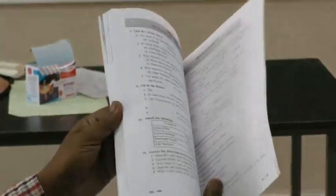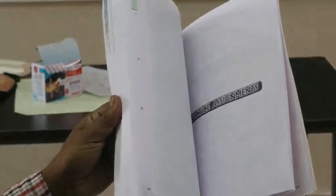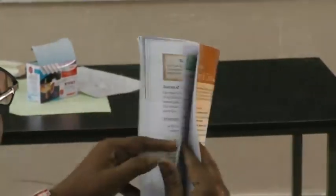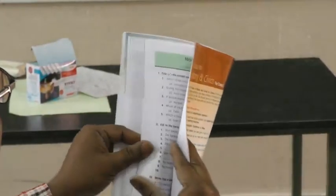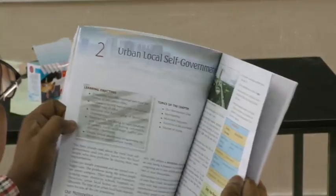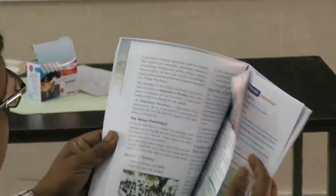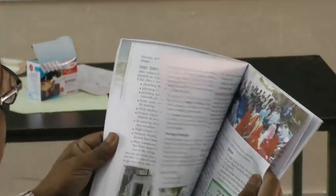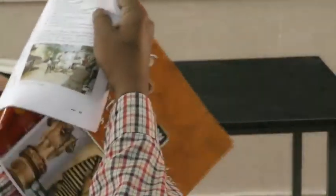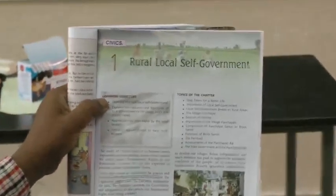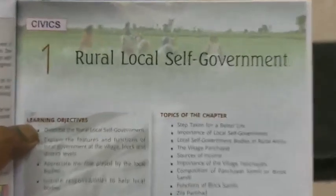I will also be showing you the first page of the third chapter which you have to study — that is Rural Self-Government. This is the third chapter which you have to study.